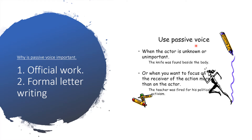Why do we use passive voice? We use passive voice for official work or formal letter writing. When the actor is unknown or unimportant, we use passive voice — for example: The knife was found beside the body. We are laying emphasis on what was found. Or when you want to focus on the receiver of the action more than the actor — The teacher was fired for his political activism. Here we are laying more emphasis on the teacher.